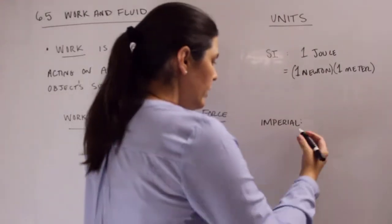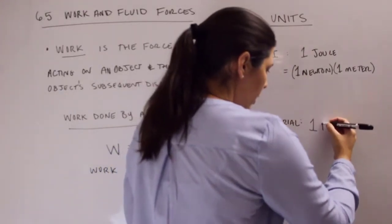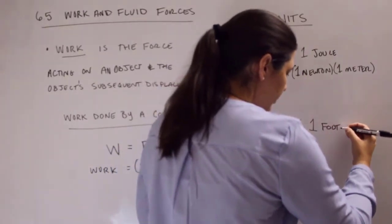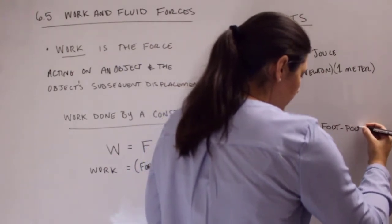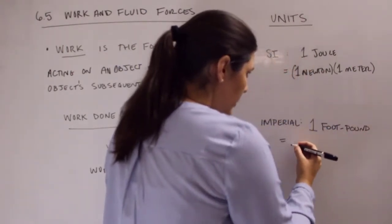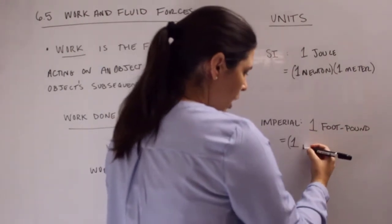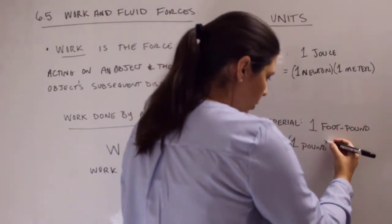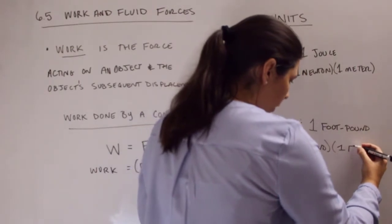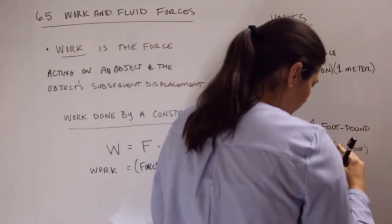For our imperial units, we have 1 foot pound. And what that equals is exactly what it looks like, but I'm just going to switch the order: 1 pound of force times 1 foot of movement for your object.